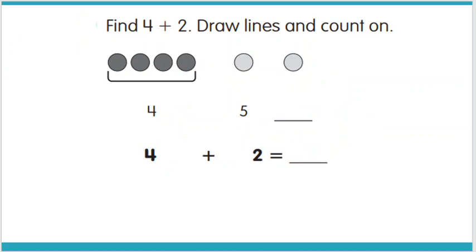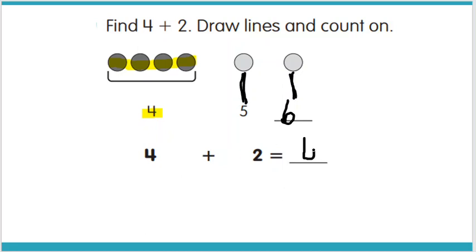Here we have find 4 plus 2 — draw lines and count on. We have our 4 and I'm going to count with those lines. I put that 4 in my mind, start with 4, and now I'm going to say 5 and 6. So 4 plus 2 equals 6.